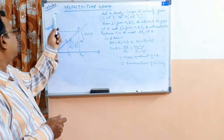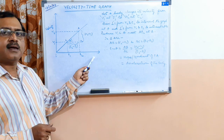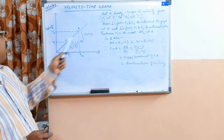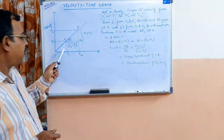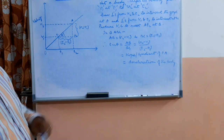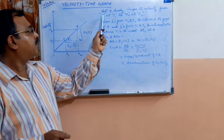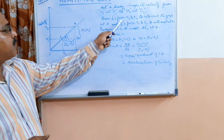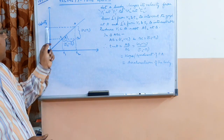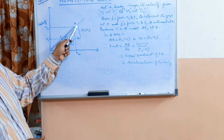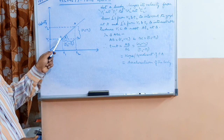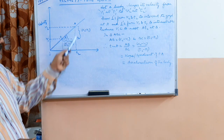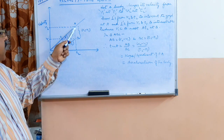Here is our velocity-time graph. Velocity is on the y-axis and time is on the x-axis. Let the velocity of a body change from v1 to v2 in time from t1 to t2. You can see v1 at t1 and v2 at t2. Draw perpendiculars from v2 and t2; these two perpendiculars intersect at point A on the graph. Perpendiculars from v1 and t1 intersect the graph at C. Produce v1C to meet At2 at B, giving triangle ABC.